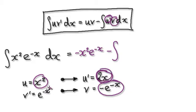So this is u prime times v. That's this thing here. So that would then be negative 2x, e to the minus x. And then you've got your dx.